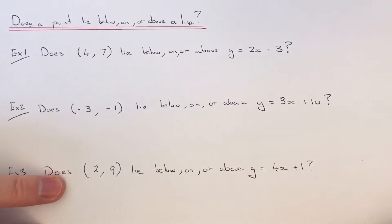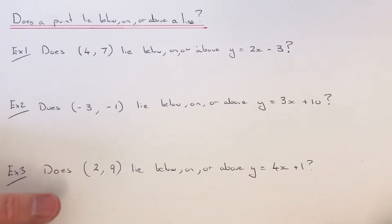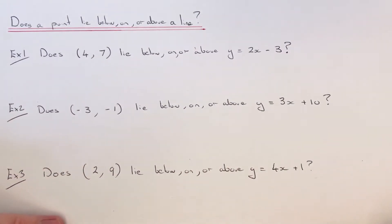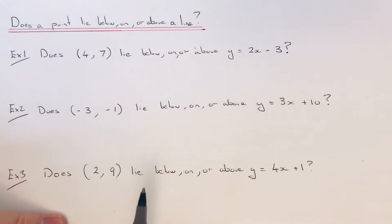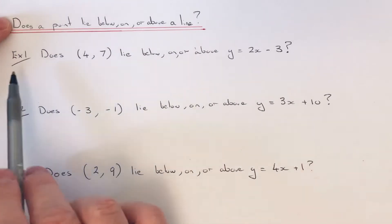Hi guys, welcome back. This is Maths3000. Today I'm going to show you how to find out if a coordinate point lies below, above, or on a straight line. So let's go straight into the three examples here.